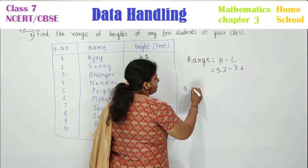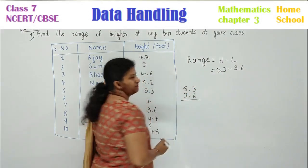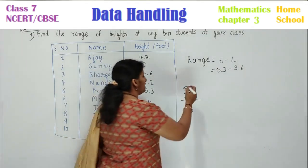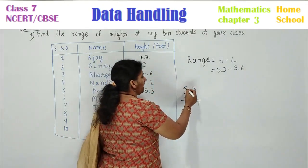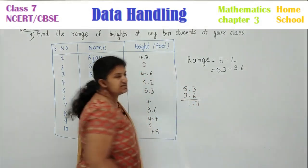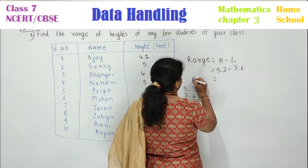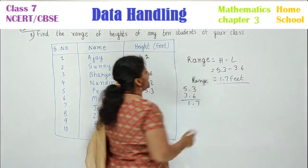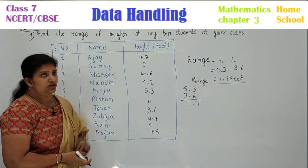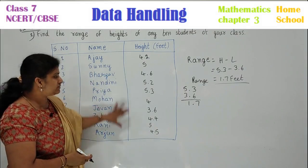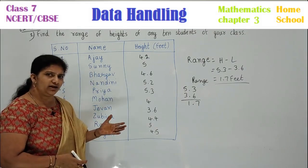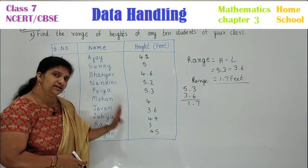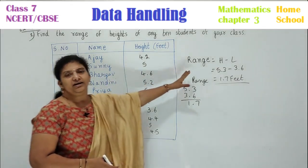3.6 is the low score and 5.3 is the highest score. Subtract this children: 5.3 minus 3.6. We need to take a borrow: 13 minus 6 is 7, and 4 minus 3 will be 1. So finally, what is your range children? Range is equal to 1.7 feet is your answer. So I have taken one example. Children, there is no rule that only these values you need to write. Any 10 values you can take and you need to find the range for that.